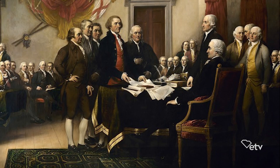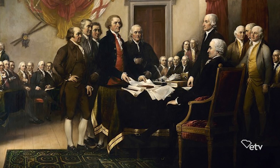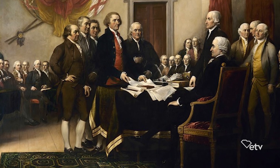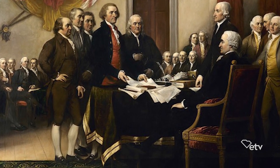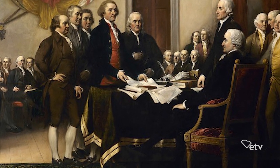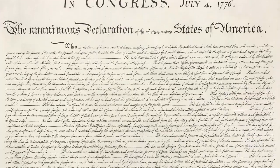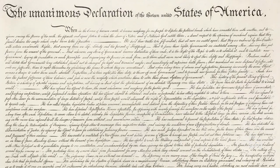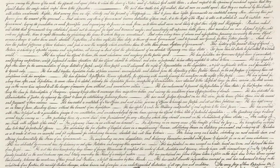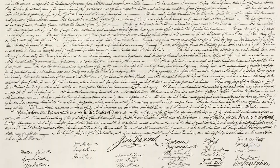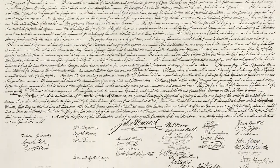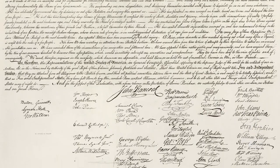The colonies became fed up with the king and drafted a document stating that the 13 states no longer recognized English rule. This document is, of course, the Declaration of Independence, signed July 4, 1776. The Declaration listed grievances against King George III, along with outlining certain legal and natural rights for its citizens.